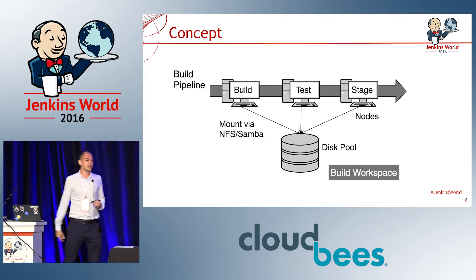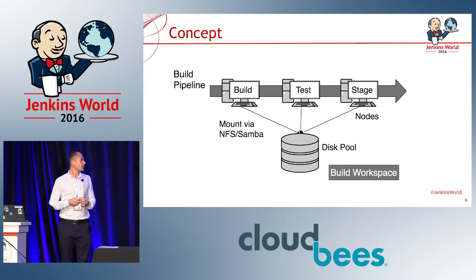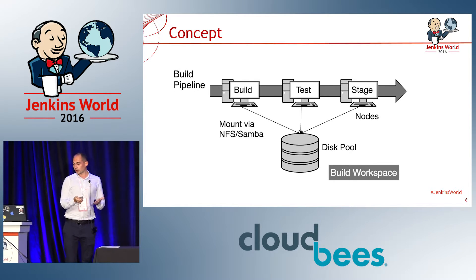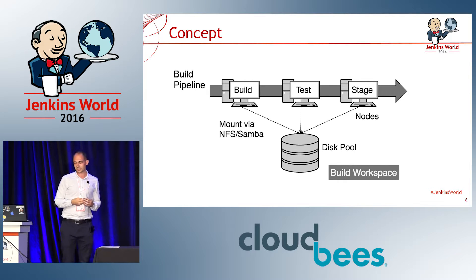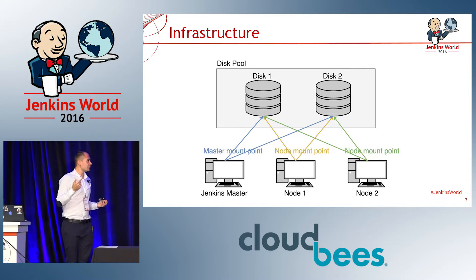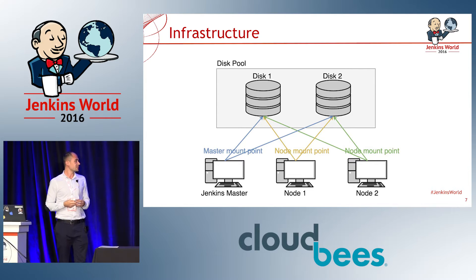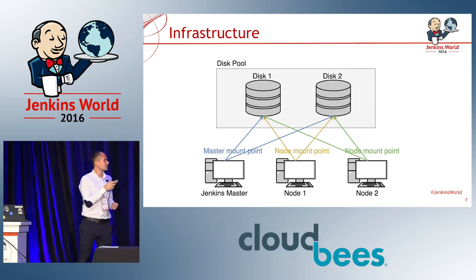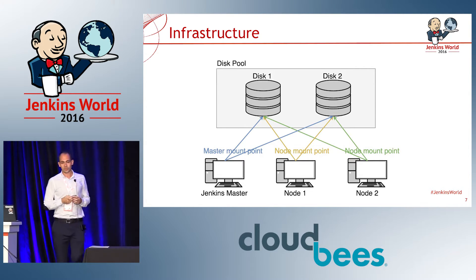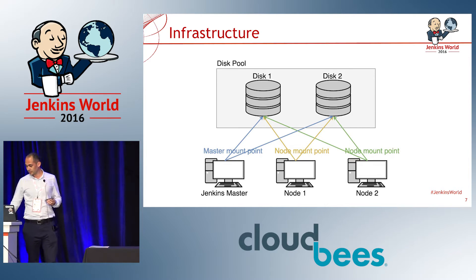The concept is that you would have the build pipeline and multiple nodes — for example, one for building and one for testing stages — and all these nodes are mounted on a common disk pool, which will consist of our common build workspace. Before using the plugin, the user needs to set up their infrastructure. From the Jenkins master as well as from each node, there have to be mounting points to the disks, and these mounting point paths will be defined in the plugin's configuration.